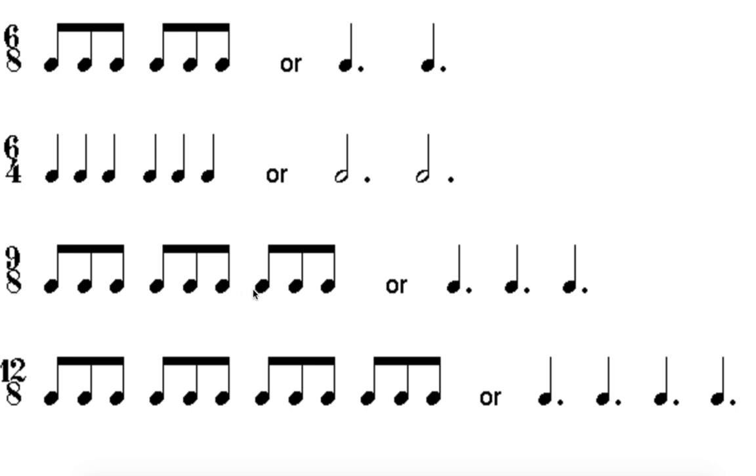9/8, we would have nine eighth notes or three dotted quarter notes. Hence, this would be called a triple meter because of that. And this would be called a duple meter because of that. This would also be called a duple meter, 6/4.